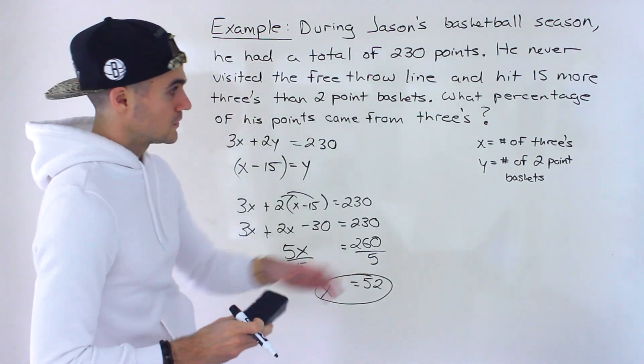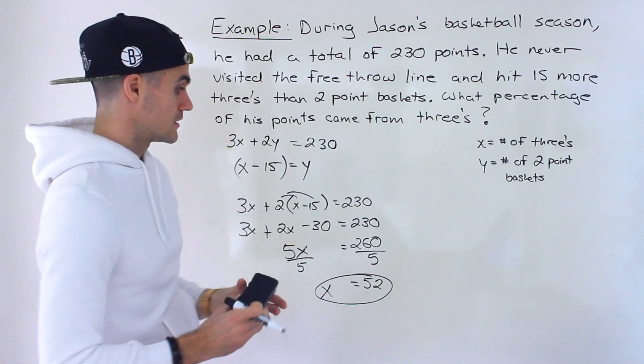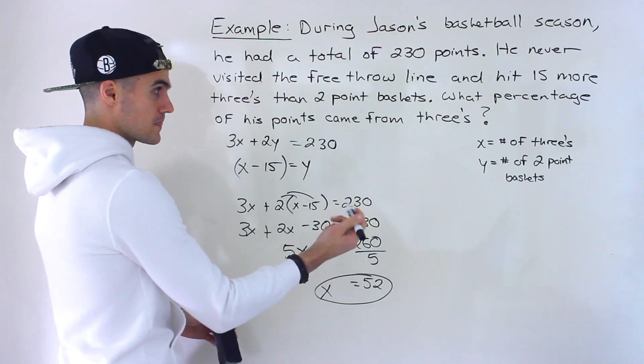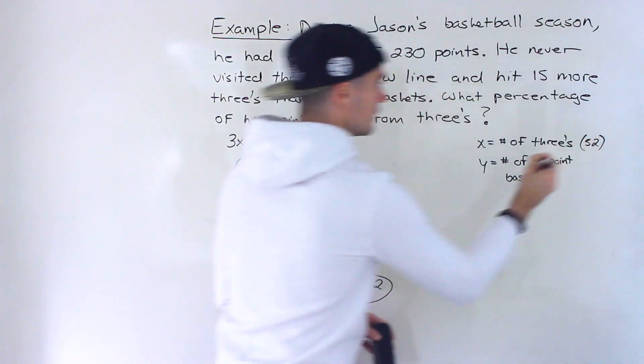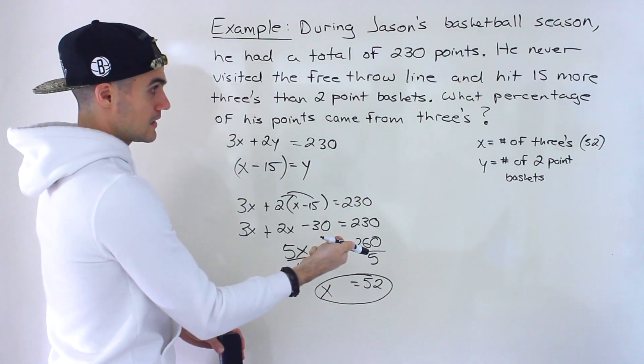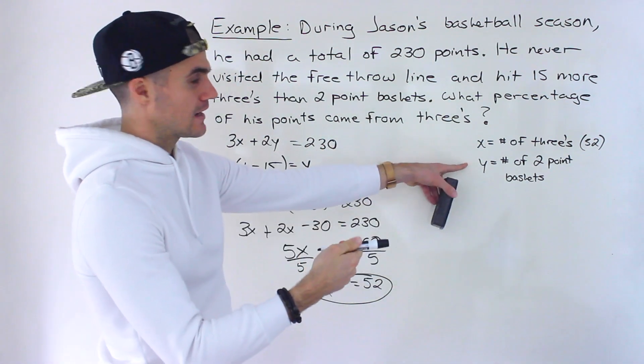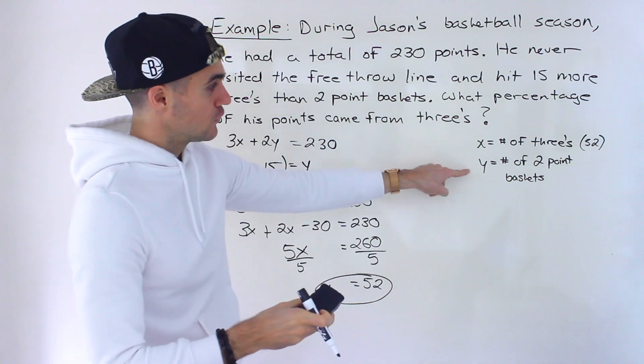So x equals 52. What did we let x equal? The number of three-point baskets made. So this here represents the number of threes. So let's actually write it over here. So this is 52. And then if we want to get the number of two-point baskets made, and actually, in this question, we don't even need to get that. I'm still going to, just in case they ask for these.